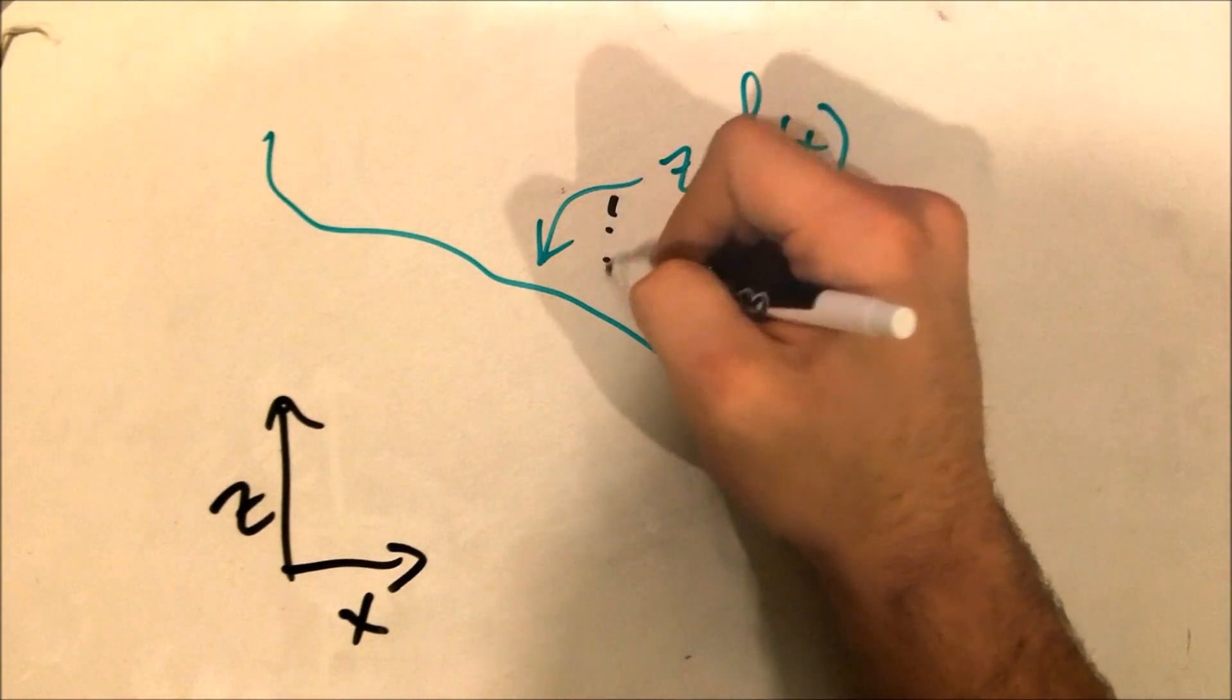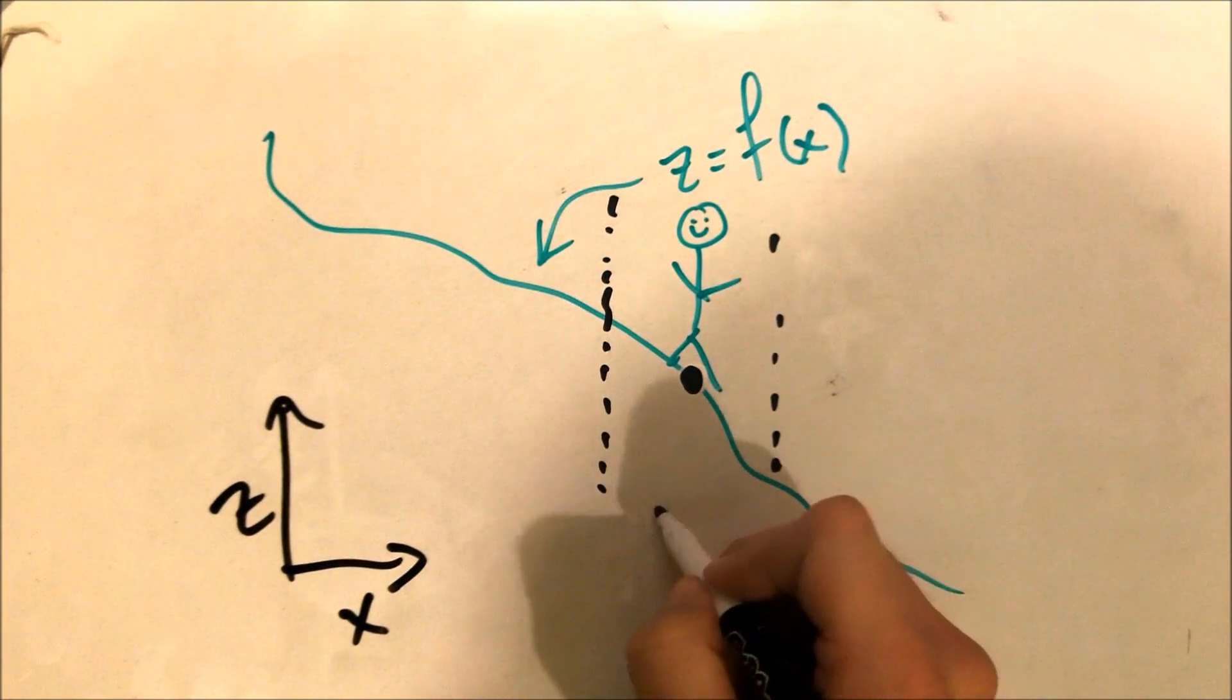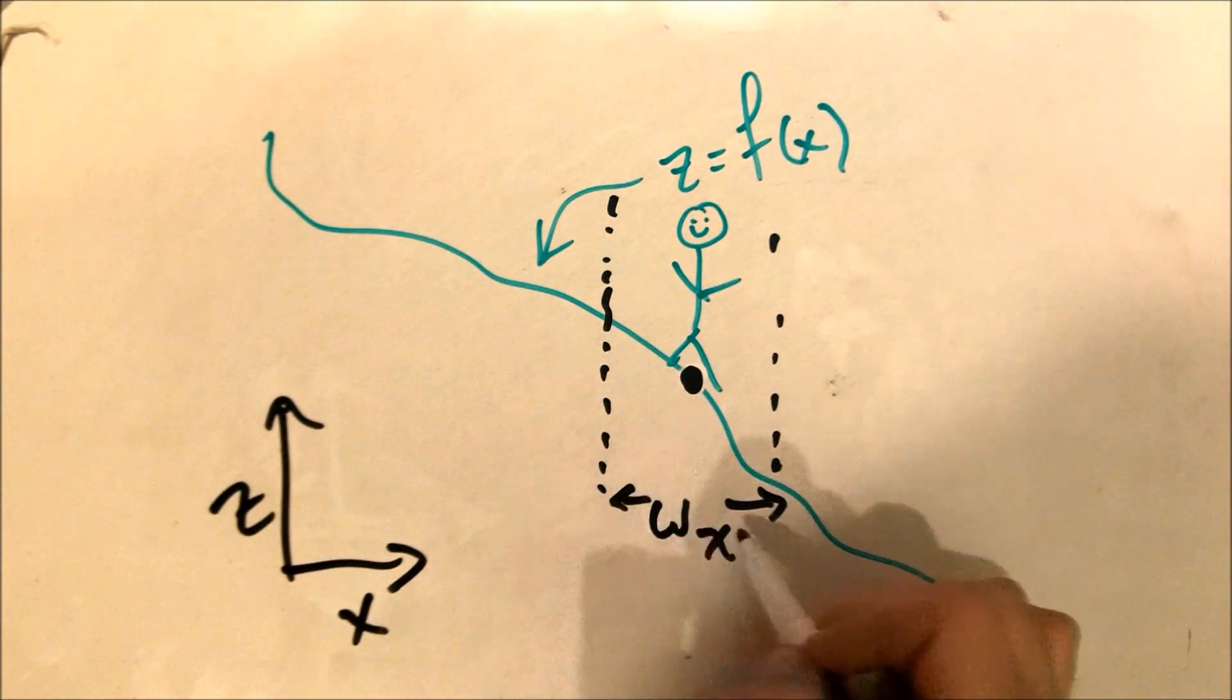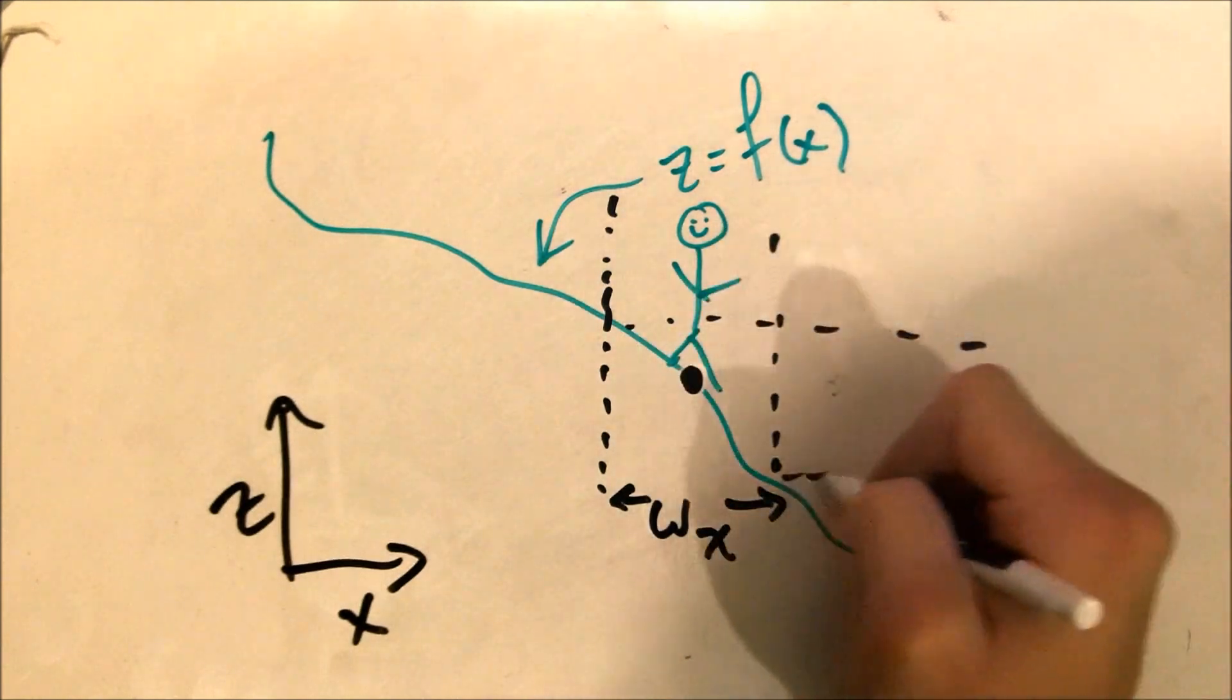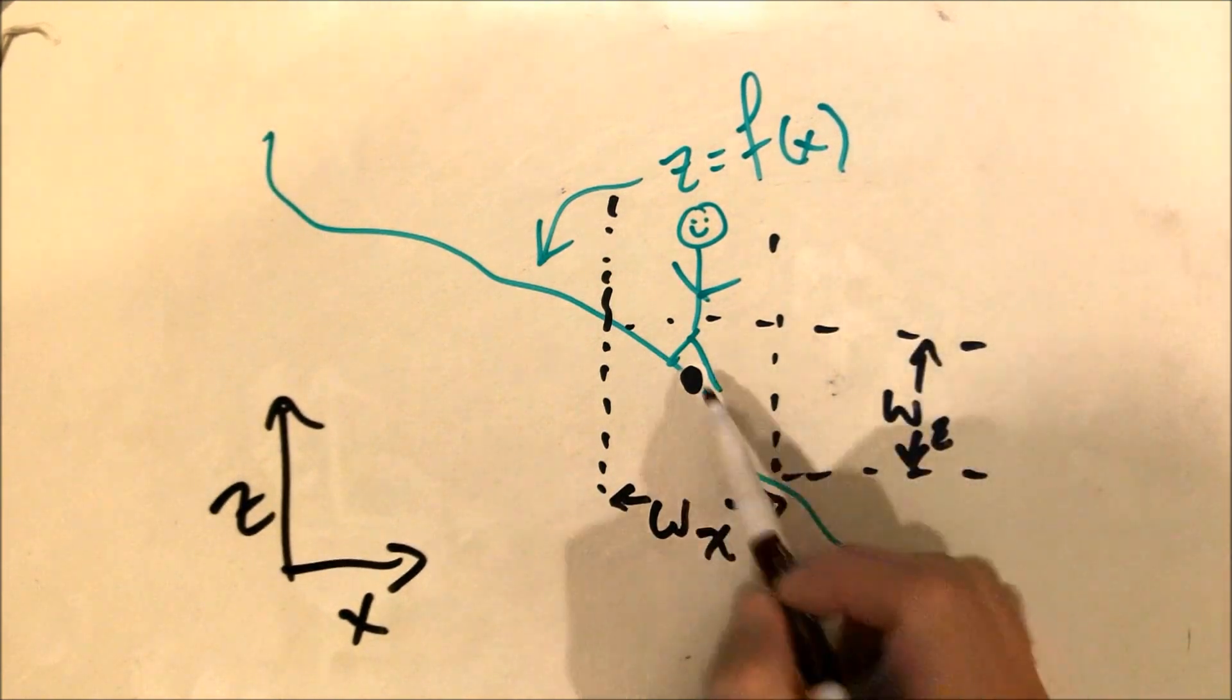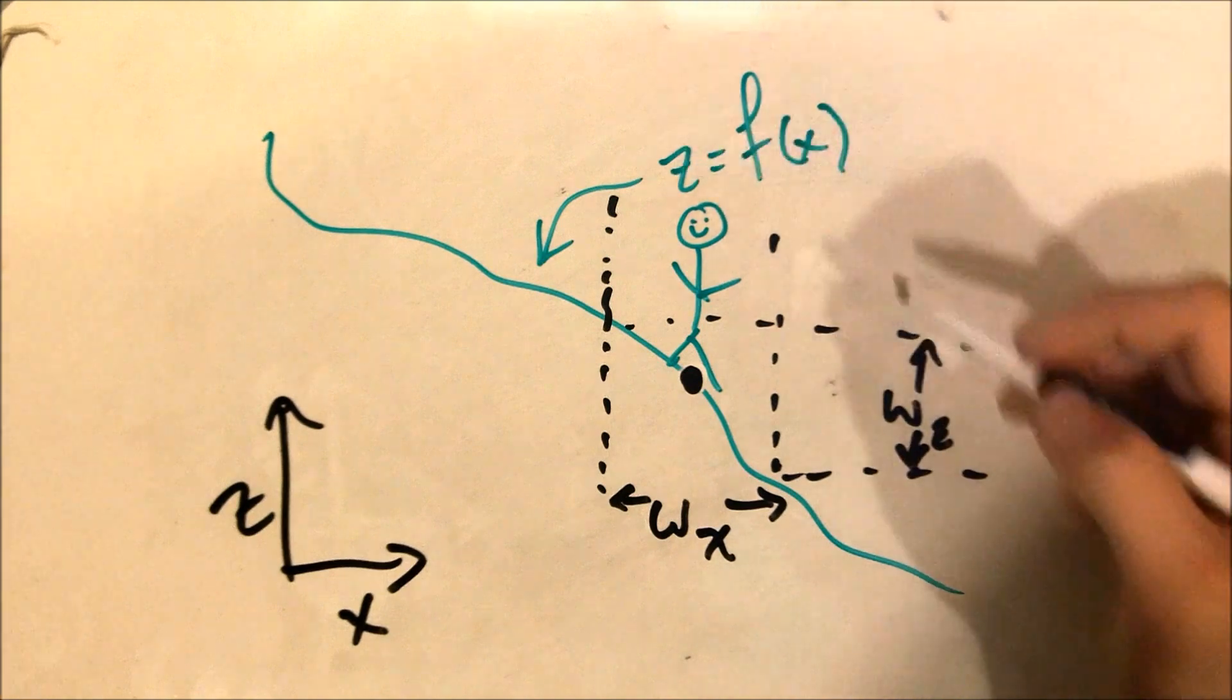In reality, all measurements come with some uncertainty. And so we're going to call this uncertainty omega-Z due to omega-X. We can see that very plainly. Because I don't know my location left to right, I have some standard error resulting in Z.